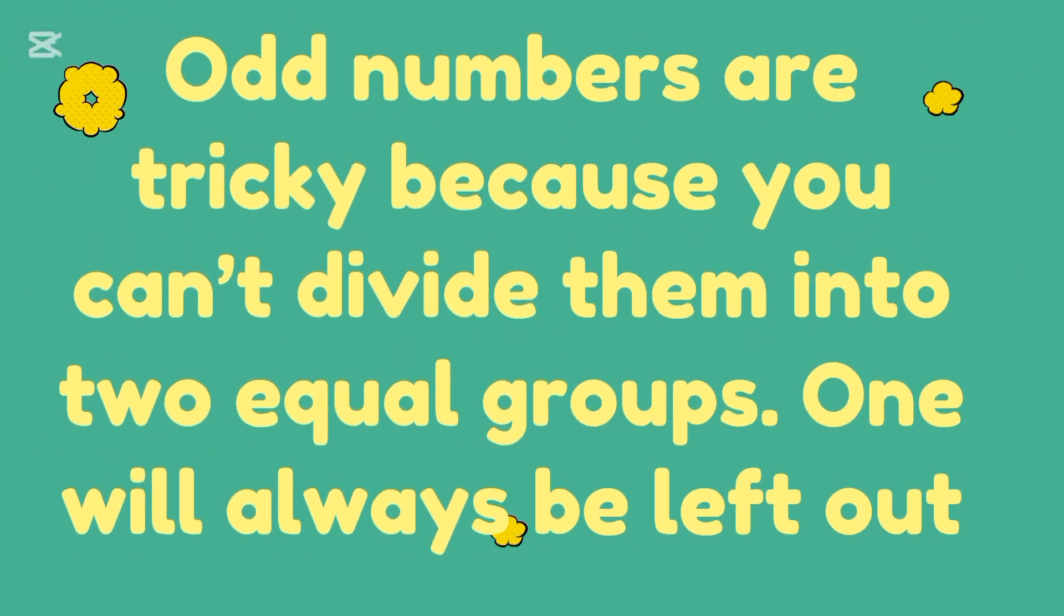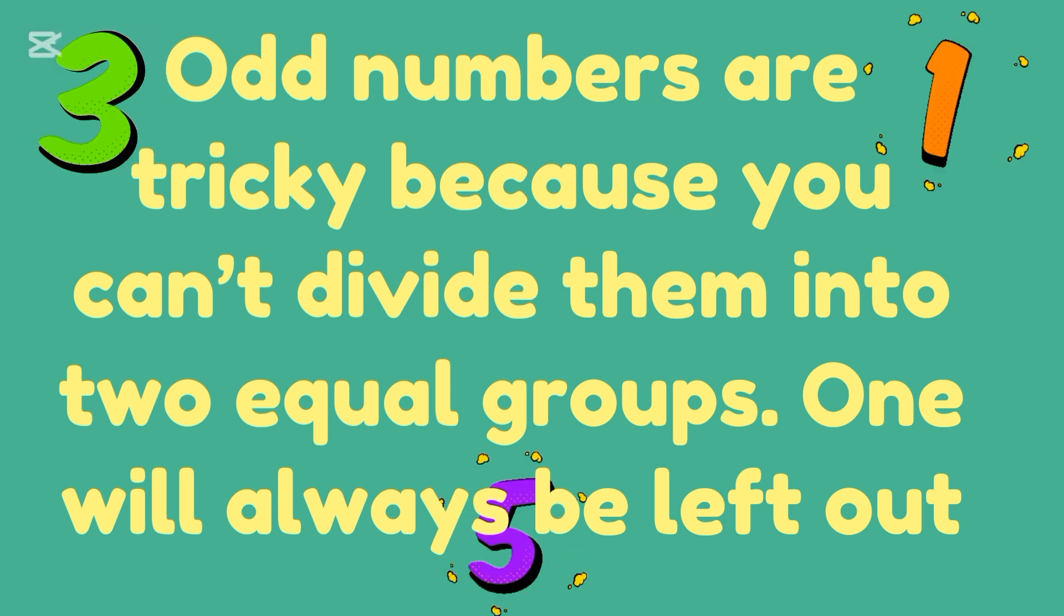Now let's learn about odd numbers. Odd numbers are tricky because you can't divide them into two equal groups. One will always be left out. We can't share equally.